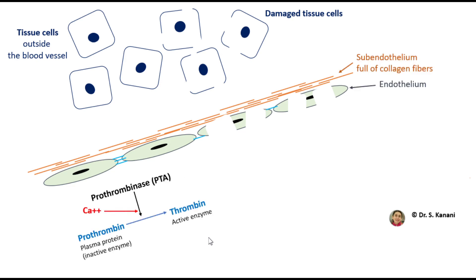Prothrombinase inside the bloodstream targets a plasma protein which is an inactive enzyme called prothrombin. Recall that plasma proteins are built by liver cells. Prothrombinase, in the presence of calcium ions (clotting factor 4), activates prothrombin.